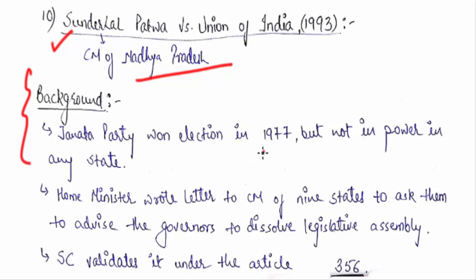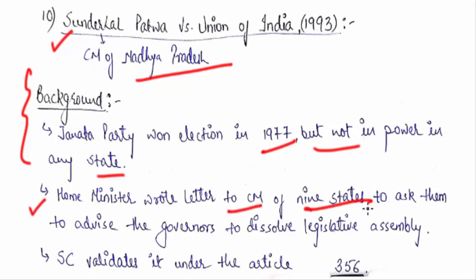The Janta Party won the election and was in power at the center, but Janta Dal was not in power in any state. So there were many difficulties for the government. The Minister of Janta Dal approached 9 state CMs and said that you should advise the governor to dissolve the legislative assembly, because the party had lost at the center level and therefore should not continue at the state level. The Janta party was against this.